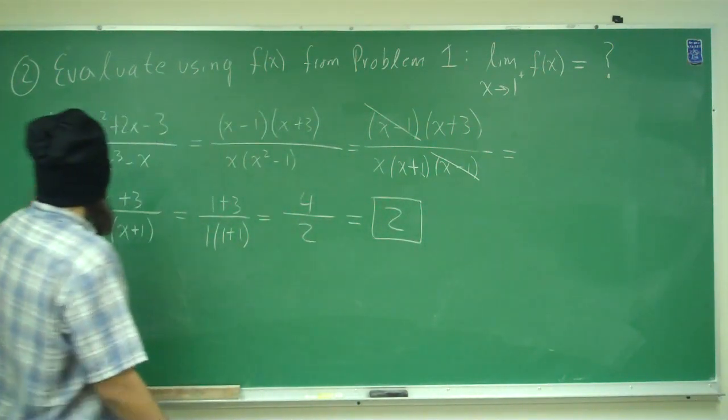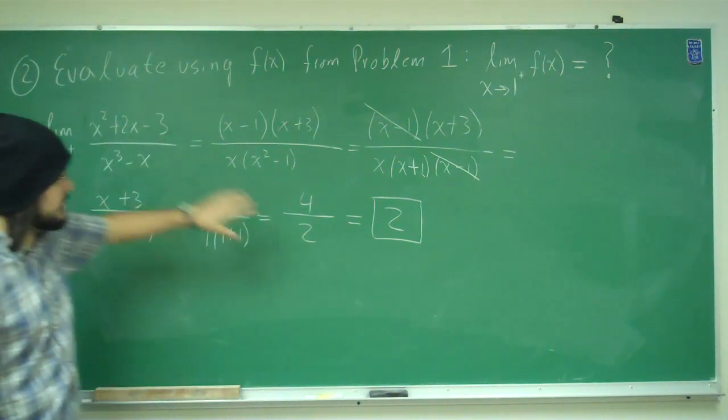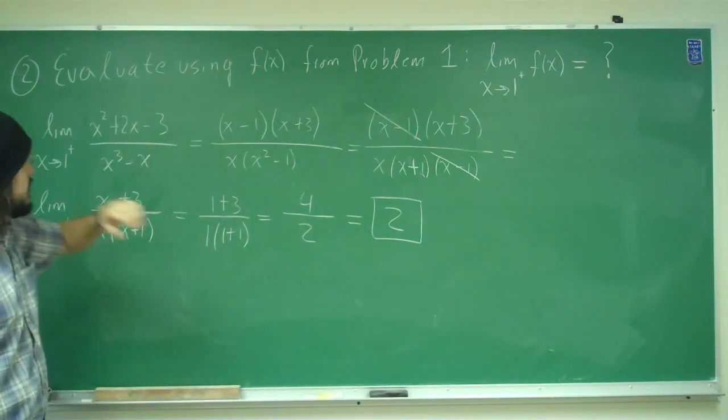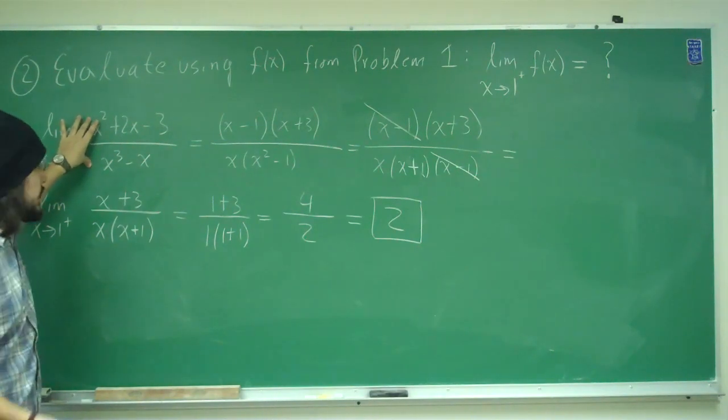Therefore, the limit as x approaches 1 of this function is going to be 2. So first what we had to do, we checked, we plugged it in, checked to see if it works, it didn't work.